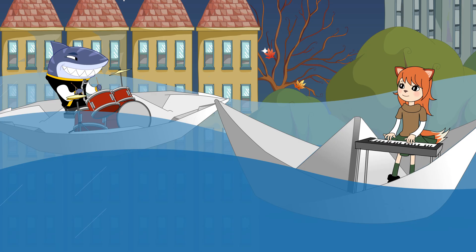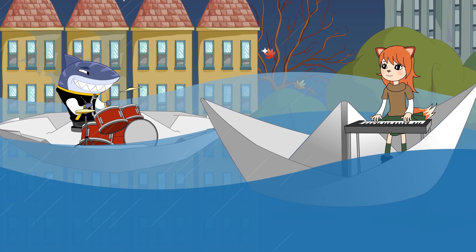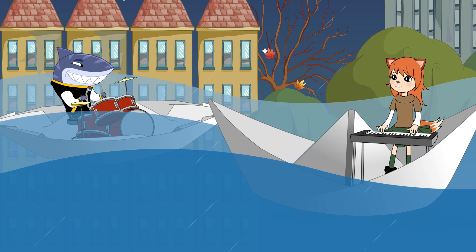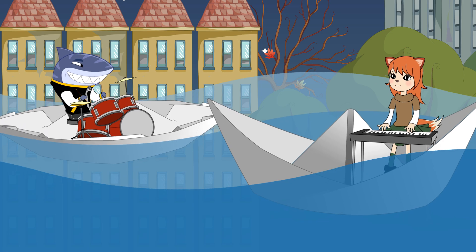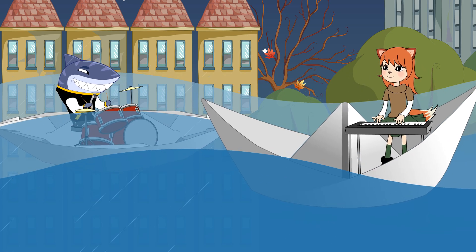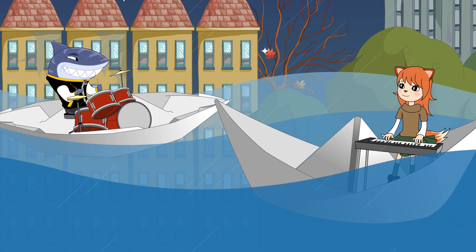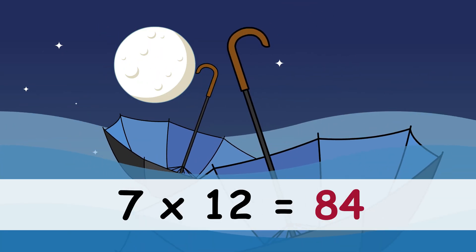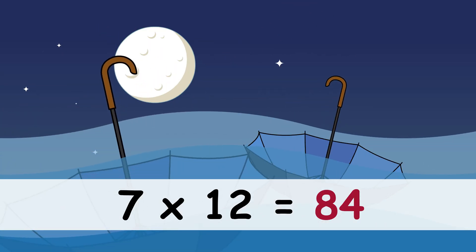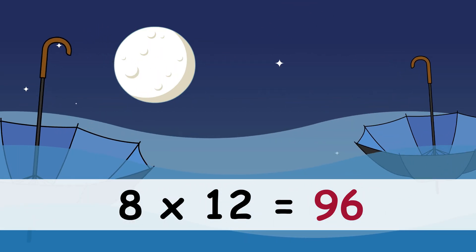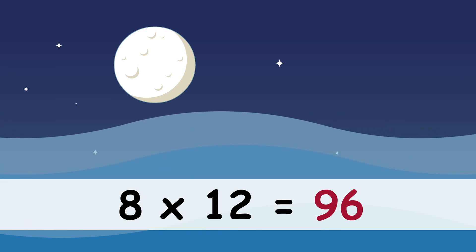We are learning the 12 times table, here we go, here we go, here we go, come on! 7 times 12 is 84. 8 times 12 is 96.